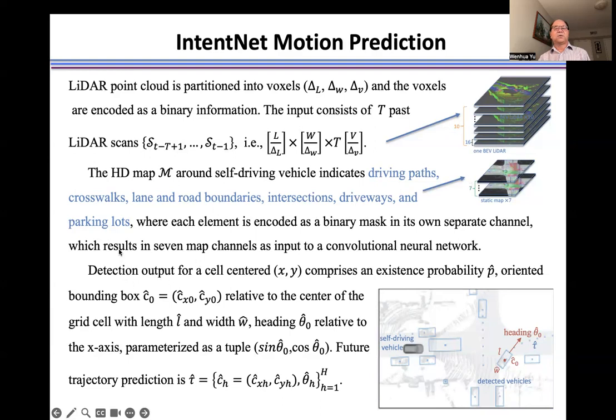IntentNet uses these two inputs to generate two outputs. One is the surrounding vehicles, including the location, dimensions, and heading angle. The other is the single trajectory for each detected vehicle.